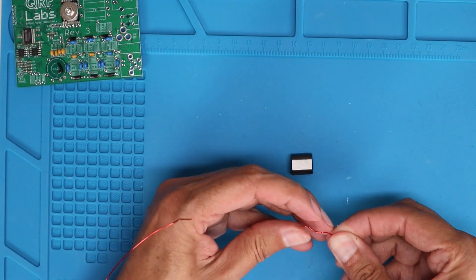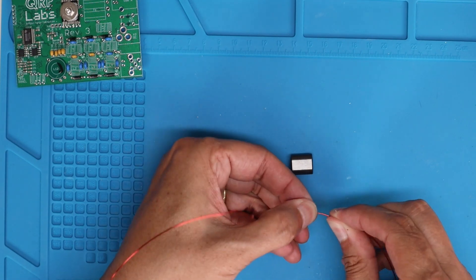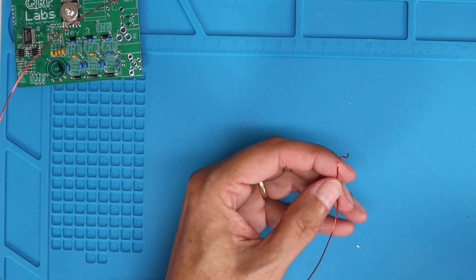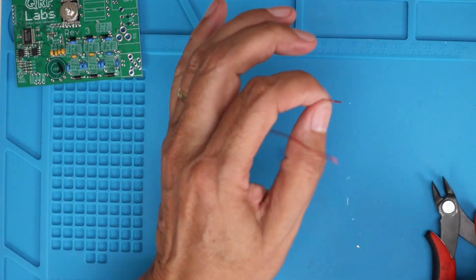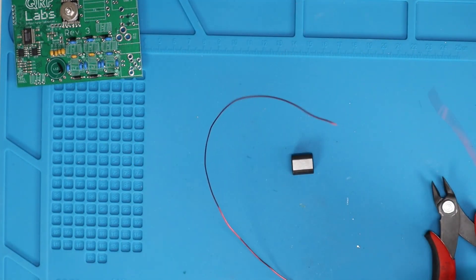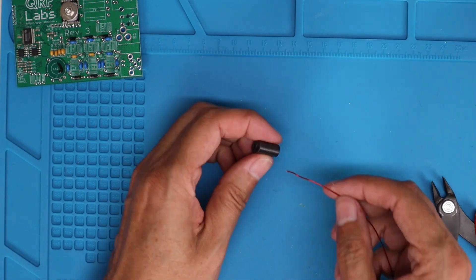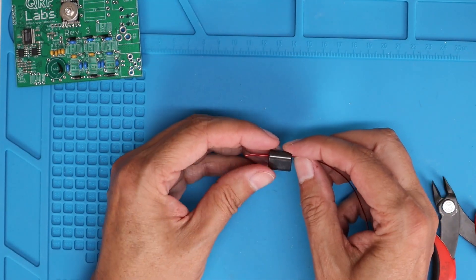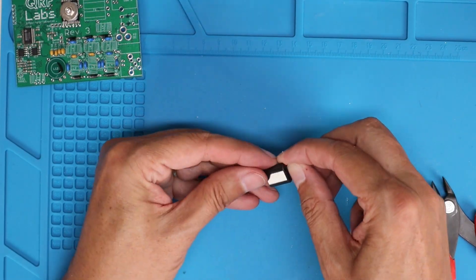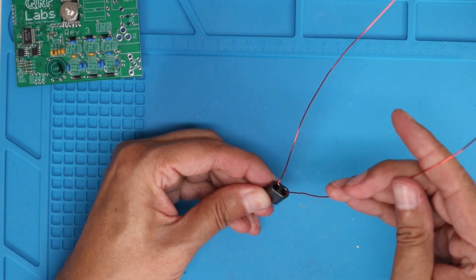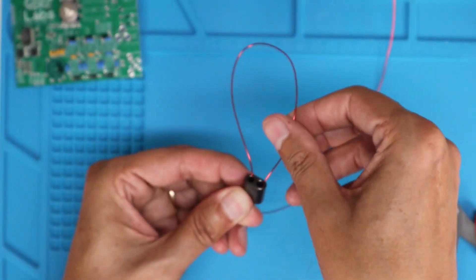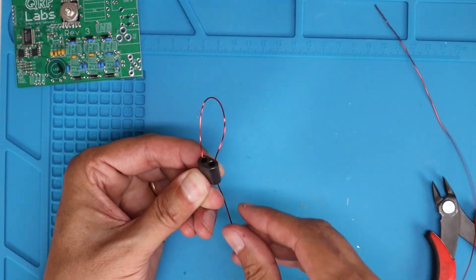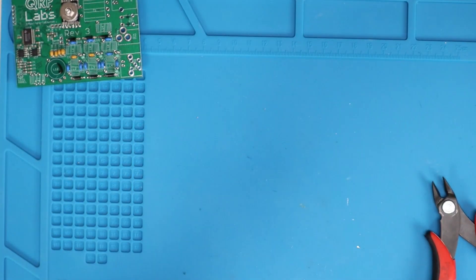First thing we're going to do is straighten out this wire. I went ahead and cut off the curly cue. So, the first thing we're going to do is pass the wire through. We're going to leave about a centimeter or roughly about an inch hanging out. And then we're going to pass it through the other hole. And this is going to make up your first turn.